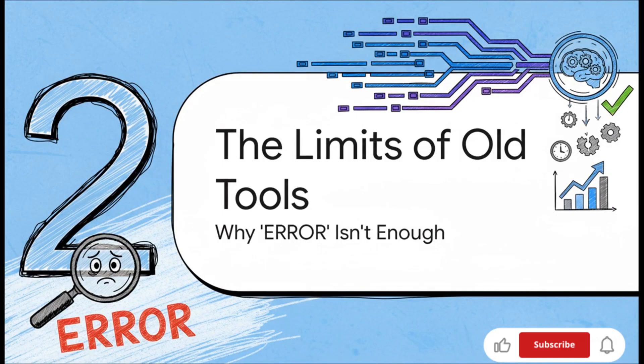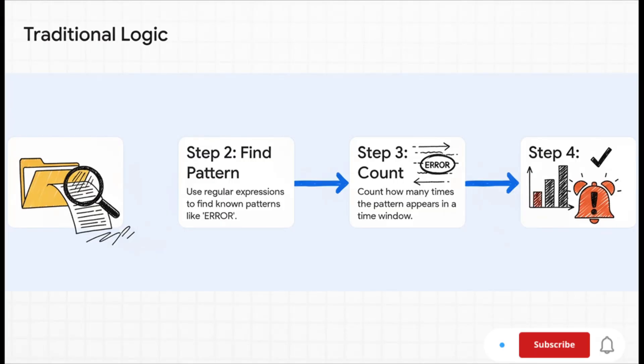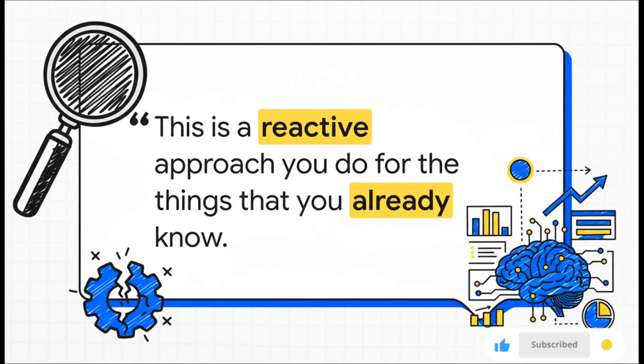So how have we typically tried to deal with this flood of data? Well, let's take a look at the classic approach and, more importantly, where it starts to break down. The old-school way of doing things is really just a simple search and count game. You write a script, maybe a quick Python or Bash script, and you tell it to look for one specific keyword like error. If it sees that word pop up, say, more than three times in 30 seconds, bang, it sends an alert.